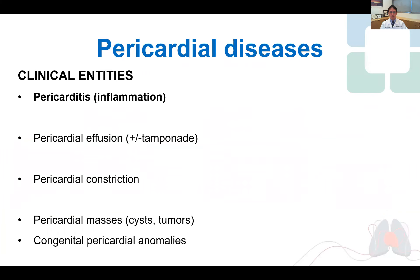When we talk about pericardial diseases, there are five main clinical entities, including pericarditis, which we will spend the most time on, pericardial effusion, constriction, and we won't spend much time on pericardial masses and congenital anomalies.